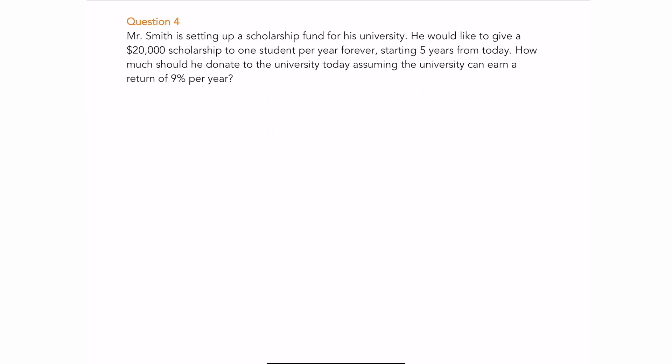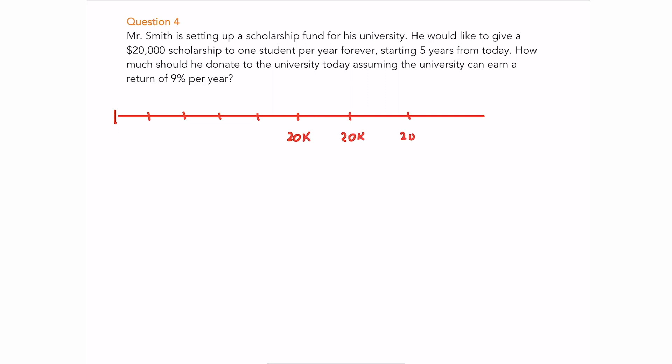Question number four: Mr. Smith is setting up a scholarship fund and wants to give $20,000 every year to one student forever. However, the first scholarship is granted five years from today. On a timeline, there's nothing for the first four years, then starting in year five he gives $20,000 and continues every year forever. So it's a perpetuity — it's just forward starting.